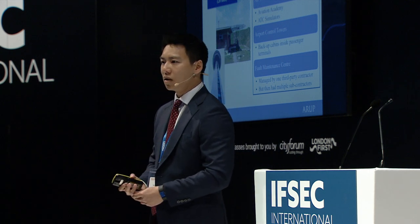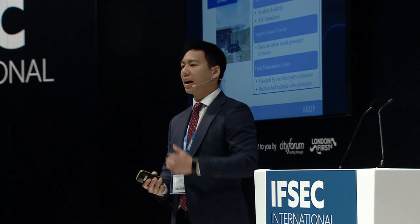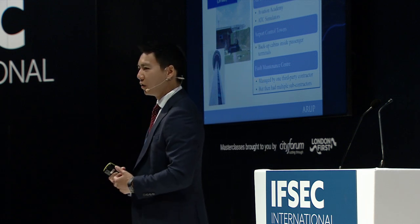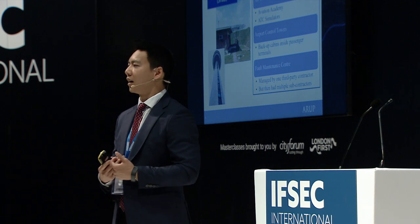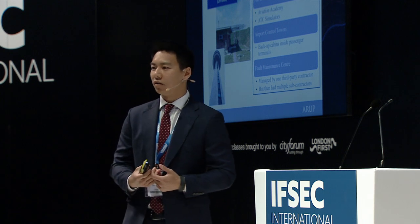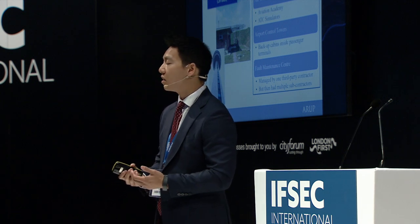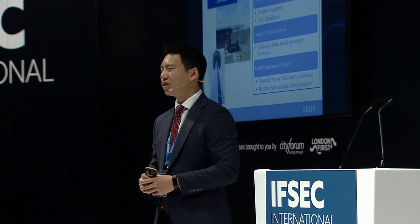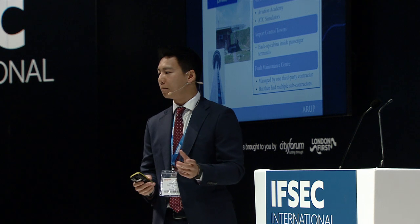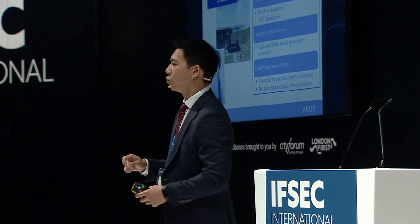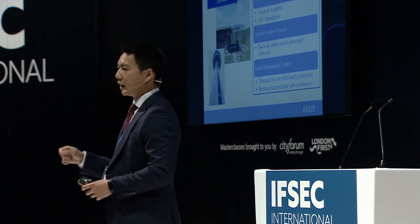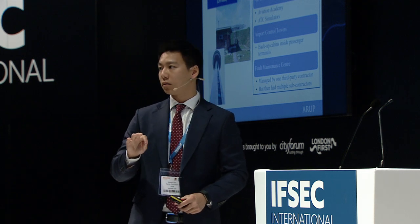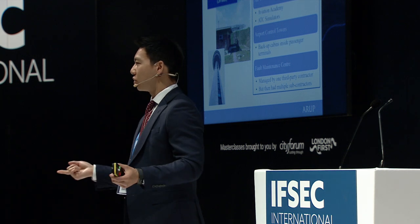Everybody knows control towers are important. What they did here was place the backup cabins — the redundancy for those control towers — in a very front-of-house space in passenger terminals that anyone could access. The argument was that only an insider would know the location, but we pointed out that insider threat is a very feasible and credible risk. Lastly, the fault maintenance center — one centralized location where all engineering errors and reports were addressed — was subcontracted to a single contractor, who then outsourced to many others.